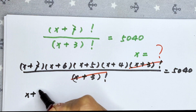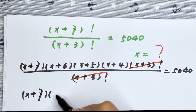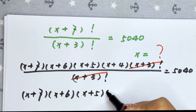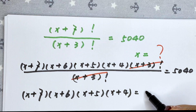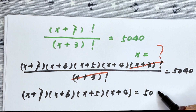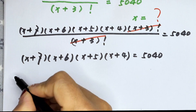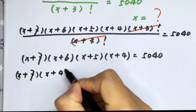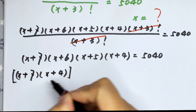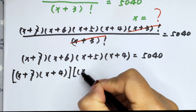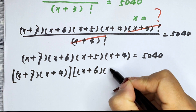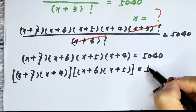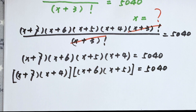We simplify by cancelling (x plus 3) factorial. So x plus 7 times x plus 6 times x plus 5 times x plus 4 equals 5,040. Now we open the brackets.